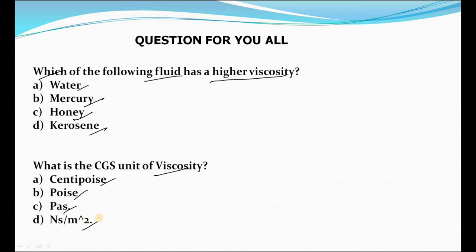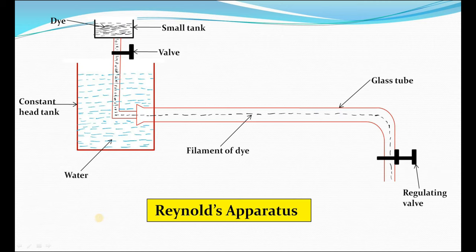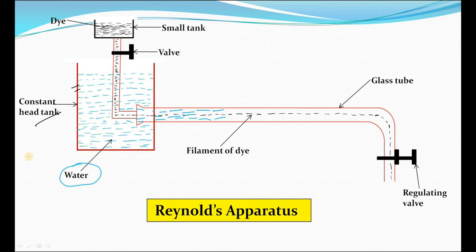Now let's start with our lecture on Reynolds experiment. This is the apparatus for the Reynolds experiment. Here you will see this is a constant head tank — the red one. When water flows into the glass tube, the head of water remains constant. That's why we say this is a constant head tank, or we can also call it the larger tank.